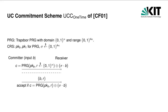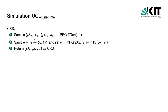To commit to bit b, the committer evaluates the PRG on the public key associated with b on a uniformly random string r. If b is 1, the pseudorandom value is masked with the string sigma; otherwise it is left unmodified and sent to the receiver. In the unveil phase, the committer sends b and the randomness r used in the commit phase. The receiver accepts if the commitment c, the bit b, and the randomness are consistent. Now let's look at the simulator. In the simulation, the simulator chooses the public keys pk0 and pk1 such that it knows the corresponding secret keys sk0 and sk1. This will later allow extraction.